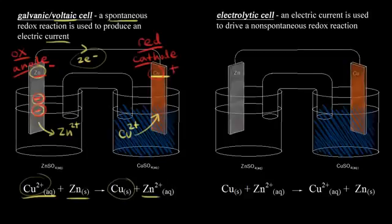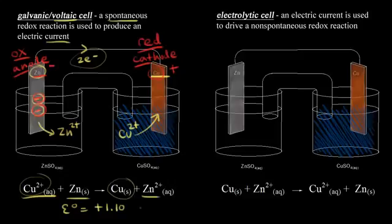This reaction is spontaneous. The standard cell potential, E°, is positive 1.10 volts. A positive value for your cell potential means a spontaneous reaction, so we produce an electric current.